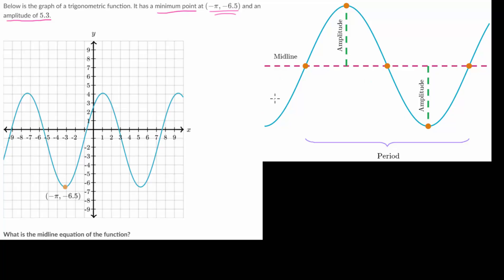And remember that a sinusoidal function could be either the sine function or the cosine function. And the amplitude is just the distance from the midline to either the maximum point or that distance from the midline to a minimum point.